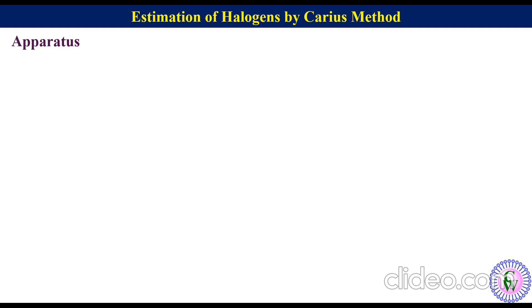In Carius method there is a small glass tube containing weighed amount of organic compound to be analyzed. It is kept inside a bigger sealed tube called Carius tube. At the bottom of Carius tube there is a mixture of AgNO3 and fuming HNO3.